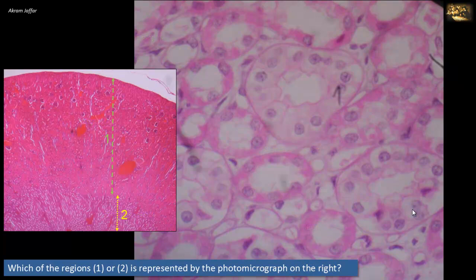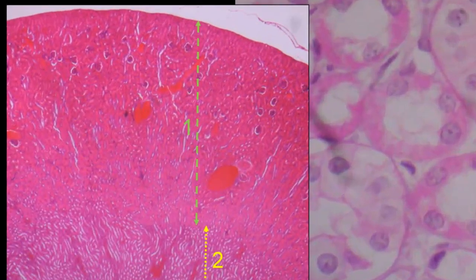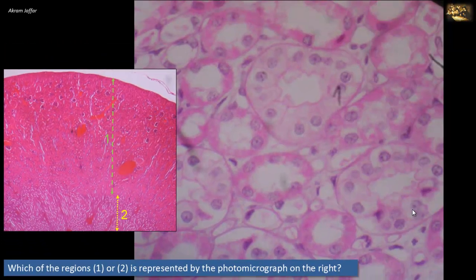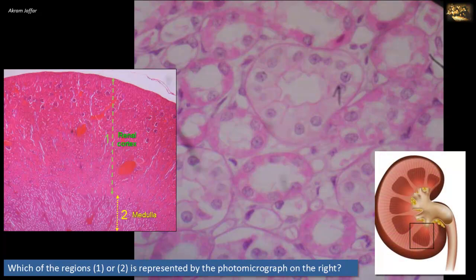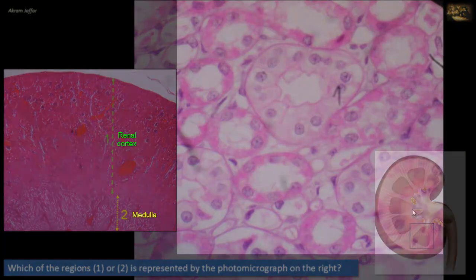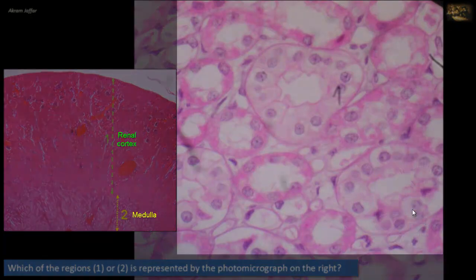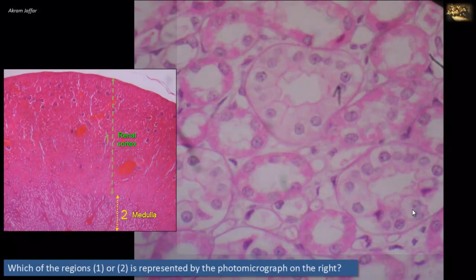Which of the regions — one or two — is represented by the photomicrograph on the right? The photomicrograph on the left shows a section of the kidney where region one represents the renal cortex, showing multiple renal corpuscles, whereas region two is the medulla. Note that in the medulla only tubules can be observed. The slide on the right shows multiple circular profiles of renal tubules. Some have a very thin wall lined by simple squamous epithelium, representing the thin limb of the loop of Henle.